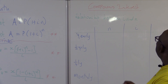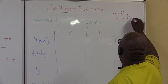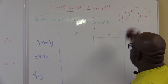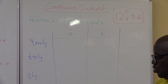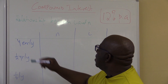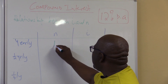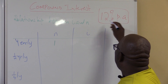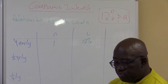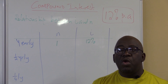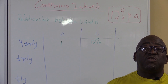Suppose a particular bank charges 12% per annum. If you compound yearly, how many years do we have in one year? N will be 1, and the interest rate will be 12% per annum. Then another bank says they are not going to compound your interest per year but every six months — compounded half-yearly.